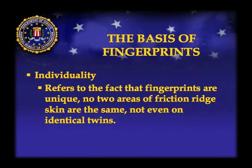We have two basic factors as to why we use fingerprints as a positive means of scientific identification. The first is individuality. Fingerprints are formed during fetal development based on genetic, environmental, and physical factors in the womb, and friction ridges and their arrangements are unique to each and every individual.